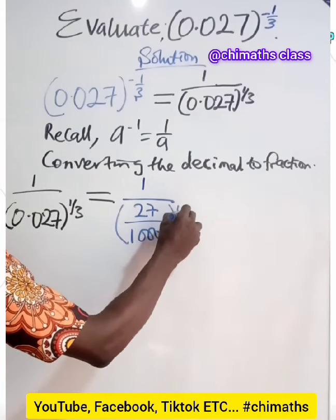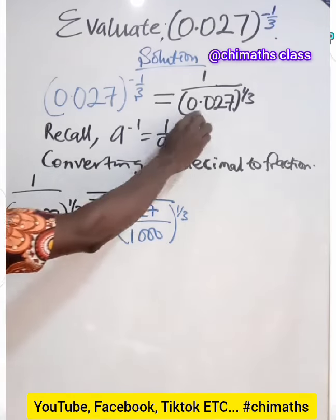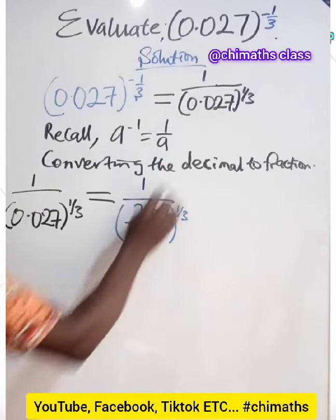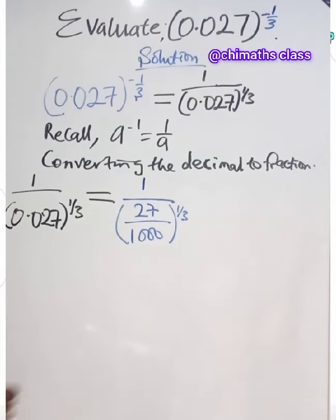Then you raise it to the power 1 over 3. Are you seeing it? Because we have put 1 here, 0, 0, 0. So that is why 27 divided by 1,000 will give you this decimal. Then you raise it to 1 over 3.